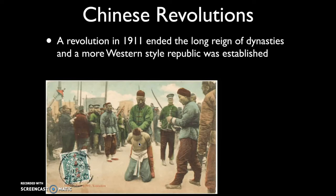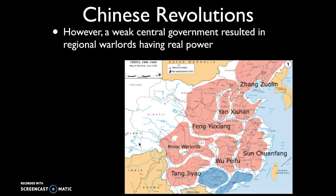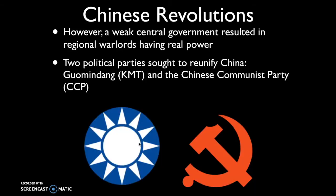A more Western-style republic is put into place. Now this republic is relatively weak — kind of equivalent to the Articles of Confederation in U.S. history, where the centralized government didn't have a lot of power. So ultimately, these regional warlords — these localized provinces — had more of the power, and they were competing and fighting with one another.